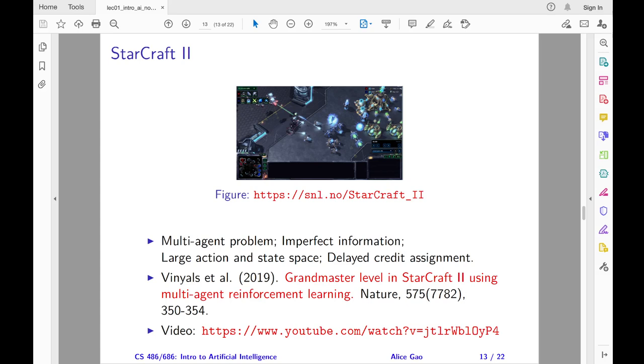Second, it is a game of imperfect information. Each player can only observe the game via a local camera. Third, the action space is vast and diverse. There are approximately 10 to the power of 26 possible choices at each step. Fourth, the game lasts for tens of thousands of time steps, and the player's strategy must balance short-term payoffs and long-term gains.